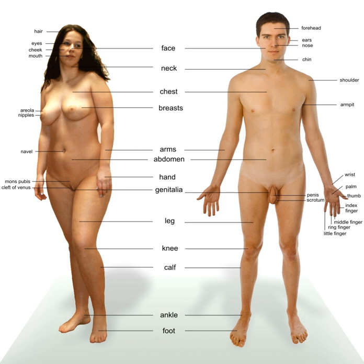A male organism is the physiological sex that produces sperm. Each spermatozoan can fuse with a larger female gamete, or ovum, in the process of fertilization. A male cannot reproduce sexually without access to at least one ovum from a female, but some organisms can reproduce both sexually and asexually.